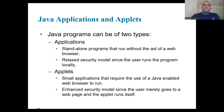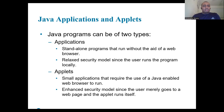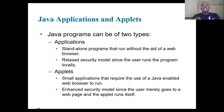Java programs come in two forms. First, applications, which are standalone programs that run without the aid of a web browser and have a relaxed security model since the user runs their program locally. Second, applets, which are small applications that require a Java-enabled web browser to run and have an enhanced security model as they run within the browser environment.